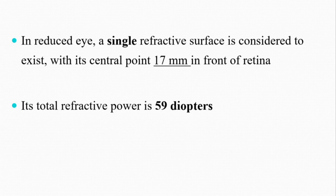The refractive power of such a reduced eye is about 59 diopters. Interestingly, if we calculate the combined refractive power of all four refractive surfaces of the actual eye, it also comes to be very close to this value of 59 diopters — so it is not far from the actual refractive power of our eye.